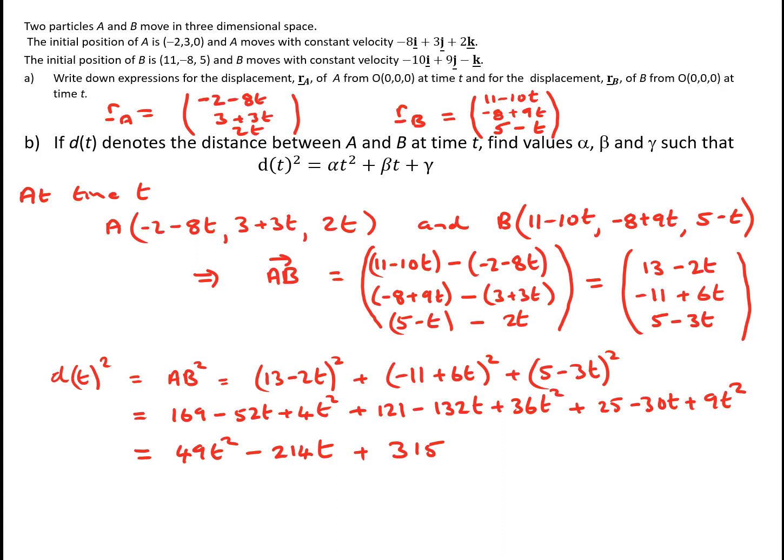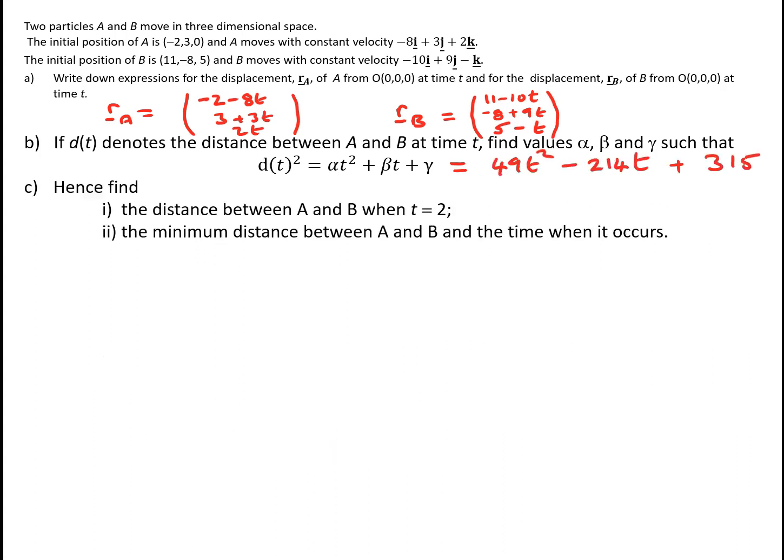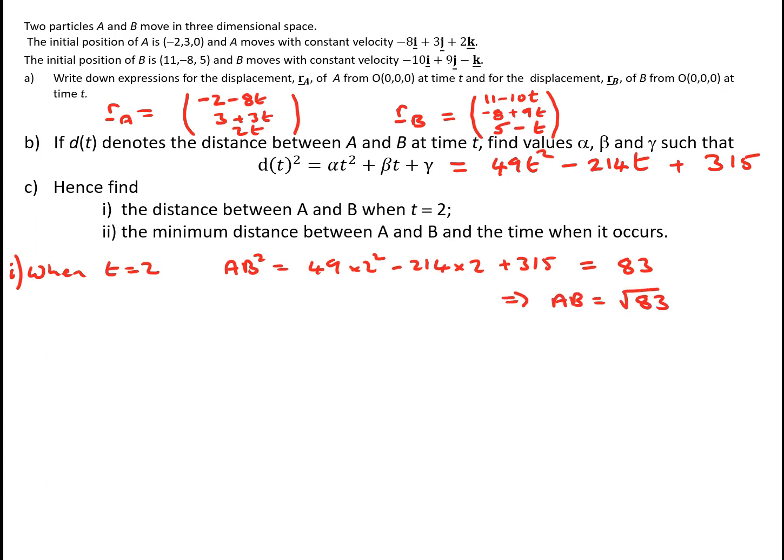So α = 49, β = −214 and γ = 315. To find the distance between A and B when t = 2, we substitute into our expression: AB² = 49(4) − 214(2) + 315 = 196 − 428 + 315 = 83. So the distance between A and B at t = 2 is √83.